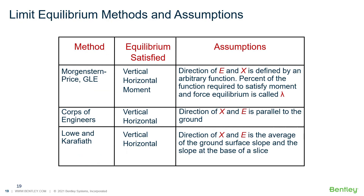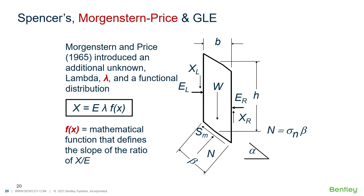Lastly, we have Morgenstern-Price, Corps of Engineers, and Lowe-Karafiath method. For the Morgenstern-Price and GLE method, it solves for vertical, horizontal, and moment equilibrium. The direction of E and X is defined as an arbitrary function. The percent of the function used that is required to satisfy moment and force equilibrium is called your lambda function, and that has to be found through iteration in the solution. Your shear force is a function of your normal force times lambda and times F(x), which is a mathematical function that defines the slope of the ratio of X divided by E.